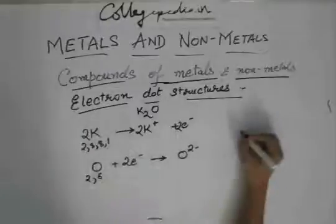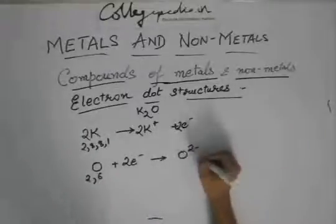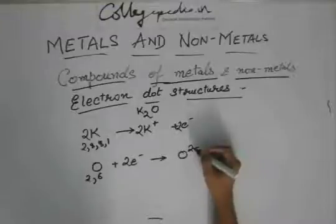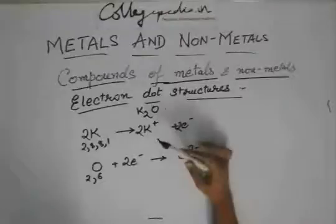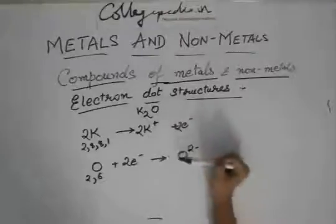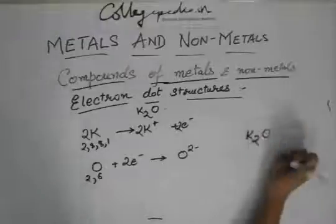And so this K will become K+, or rather two K+, and oxygen will become O2-. And one oxygen will require two potassium, or in other words two potassium will require one oxygen. So K2O will be formed.